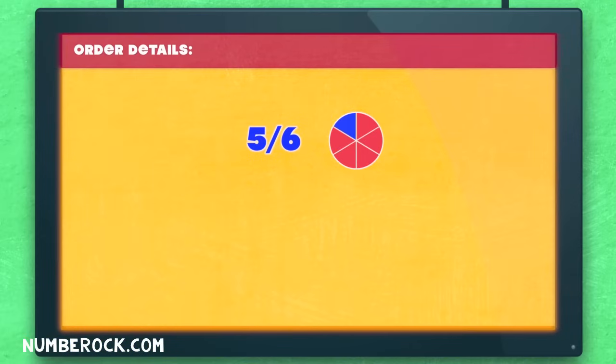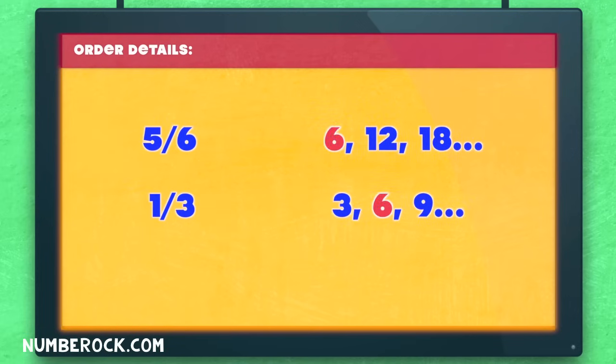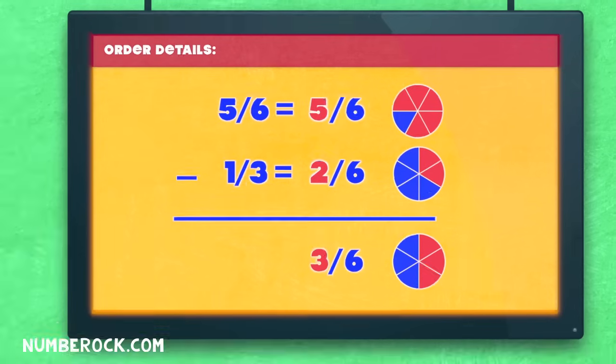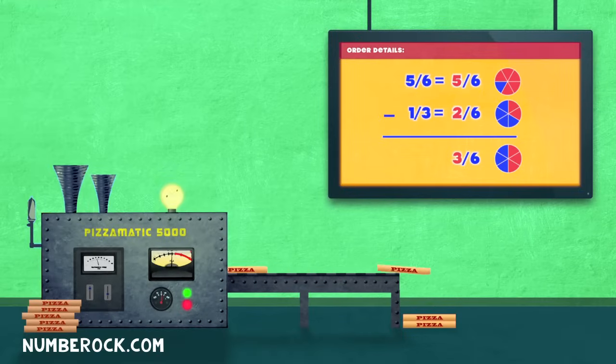Five-sixths of a pizza minus one-third. I knew the LCM was six, and have you heard? It's also called the least common denominator. I found equivalent fractions: five-sixths and two-sixths. Then I did the subtraction. Five minus two is three. Three-sixths of a pizza at the pizzeria.